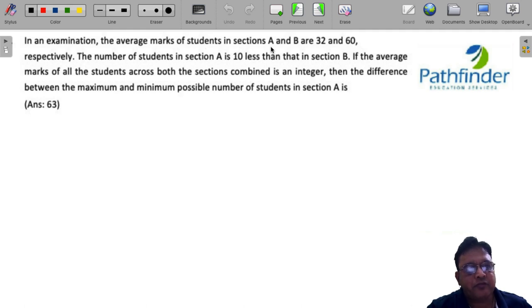In an examination, the average marks of students in section A and B are 32 and 60. The number of students in A is 10 less than that in section B. If the average marks for all students across both sections combined is an integer, then the difference between the maximum and minimum possible number of students in section A.